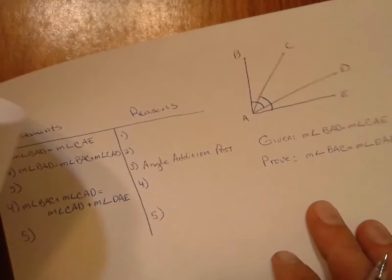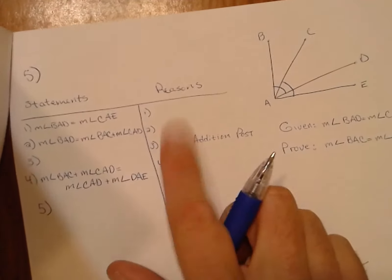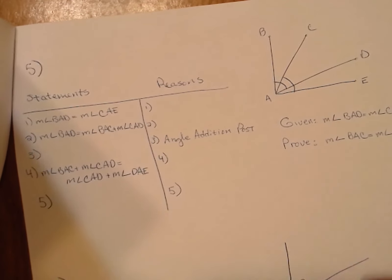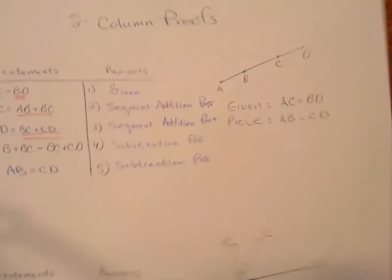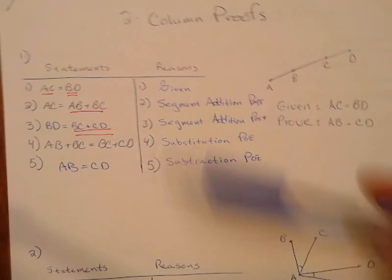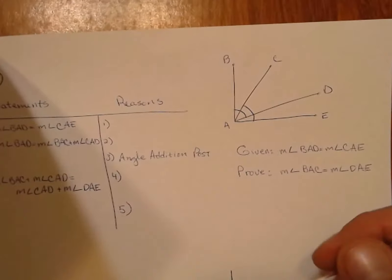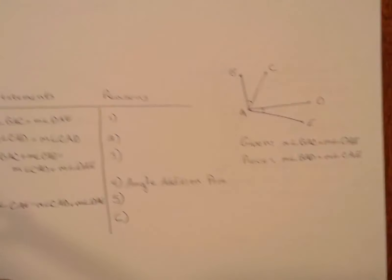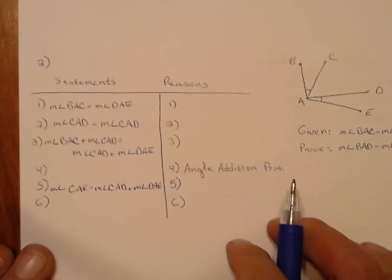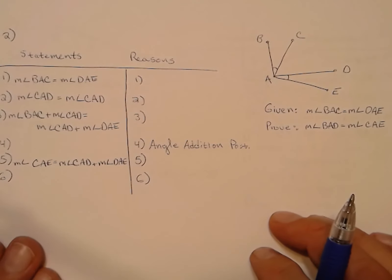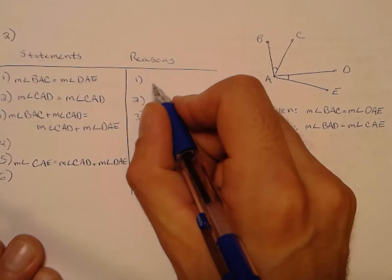Problem number one is extremely similar to problem number five — only instead of segments, we're looking at angles. The answers will be posted as a PDF by the time you're watching this video. Two-column proof number one and two-column proof number five are extremely similar.